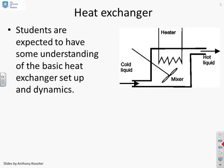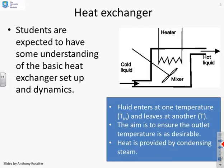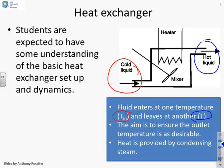So we're going to use a heat exchanger. We're not going to go through the heat exchanger in detail in this particular video because it's been done elsewhere. Fluid enters at one end as cold fluid with entry temperature T_in and leaves at the other end as hot liquid with temperature T. Our objective is to get the exit temperature at the desired value. Here we're going to assume that the heat coming from the heater is supplied by condensing steam.